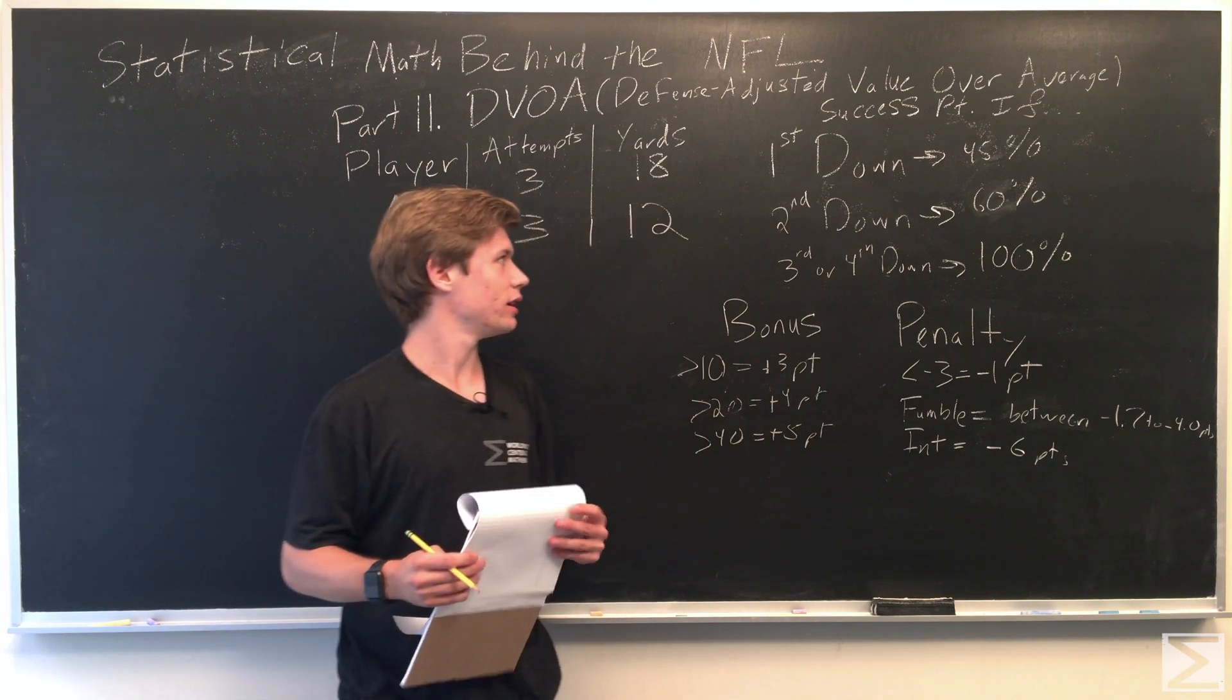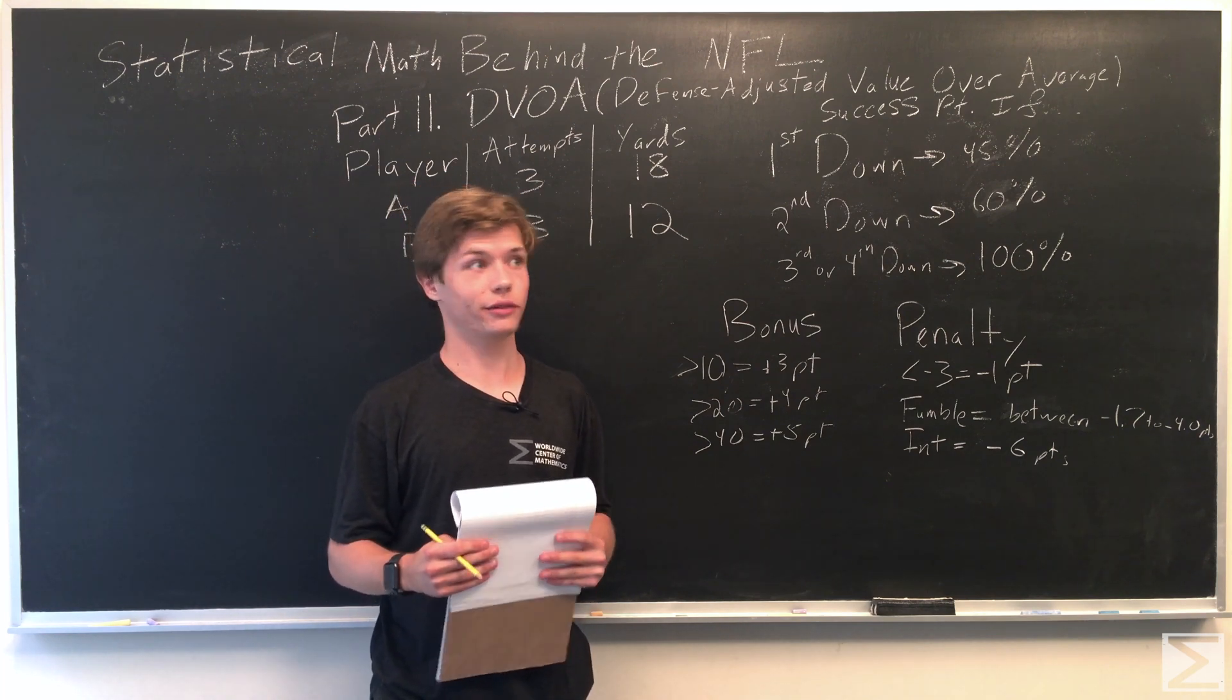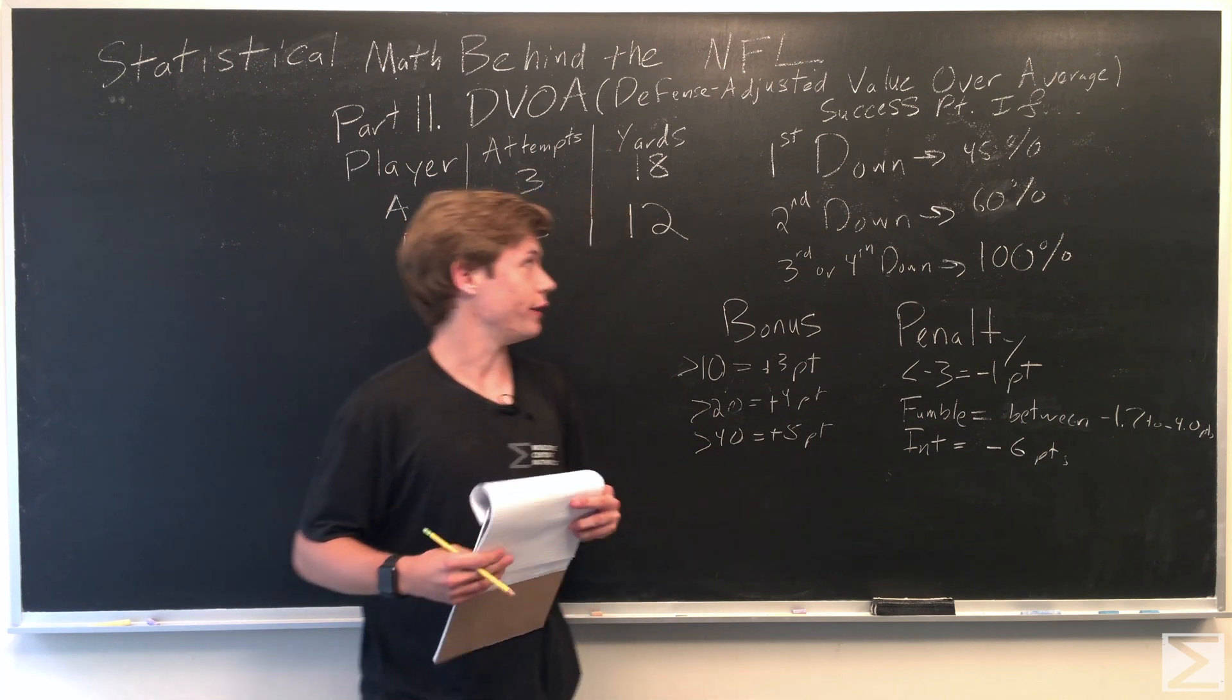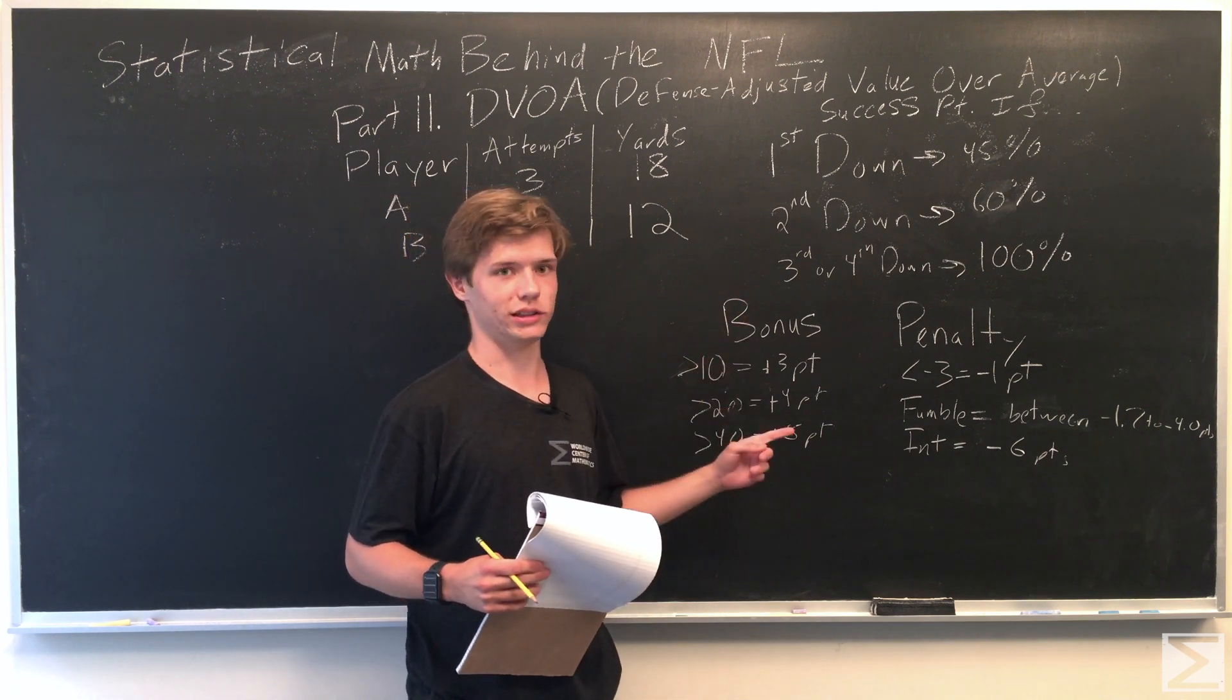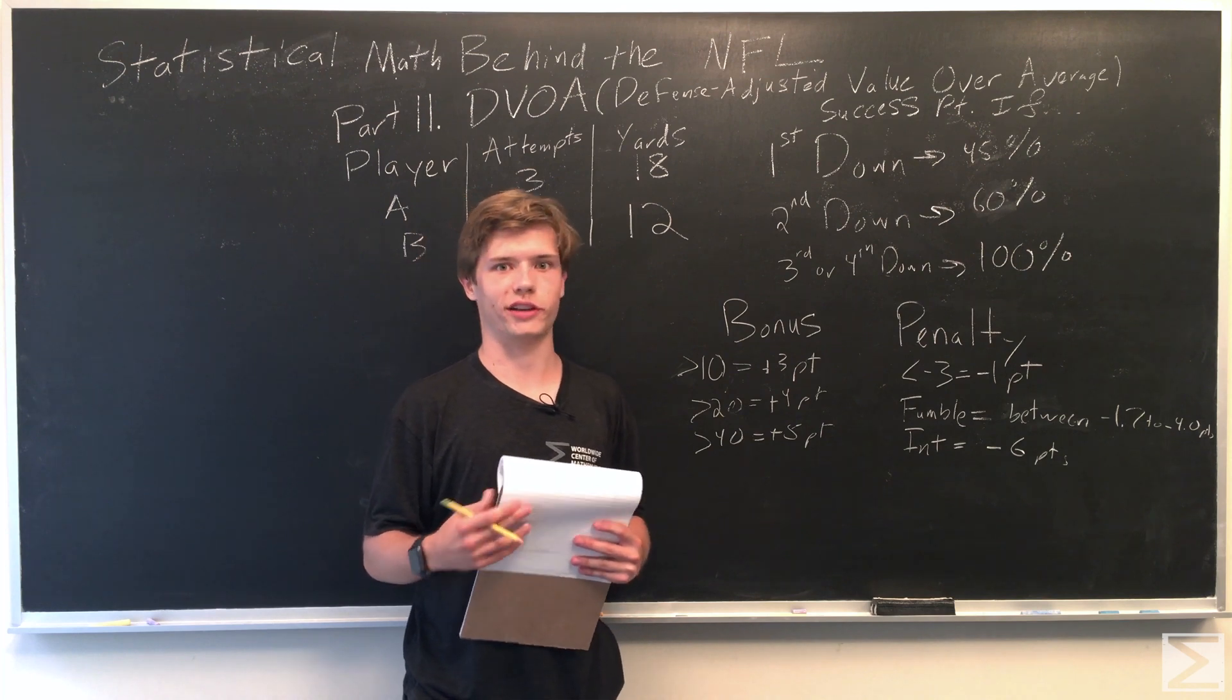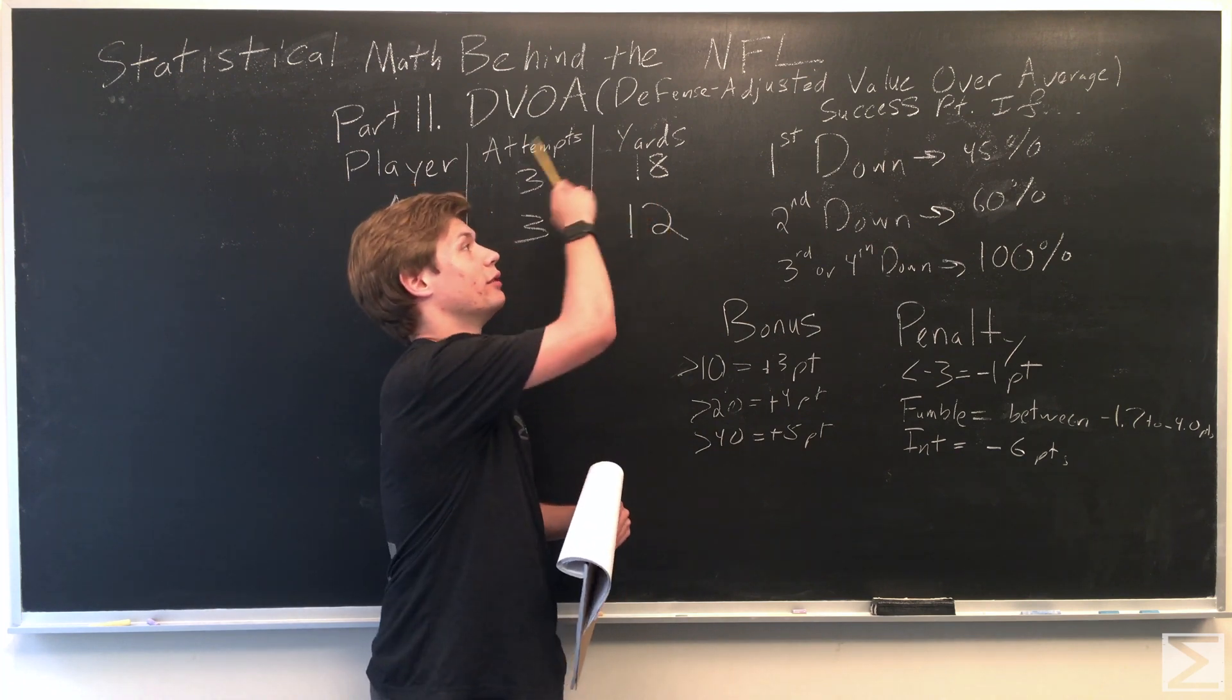And then an interception is minus six points. And so this number would end up being a percentage. And so the way you do it is that you find the average of the entire league, figure out what a player or a defense or an offense's number of success points is equal to, and then you figure out what percentage that is compared to the average, which is then adjusted for defense. That's the name DVOA.